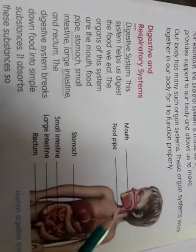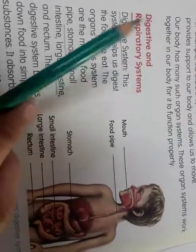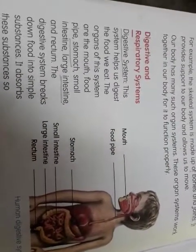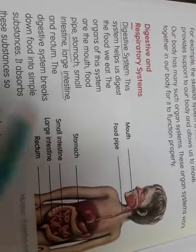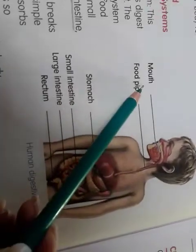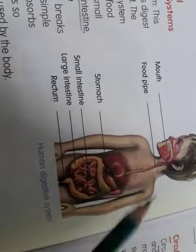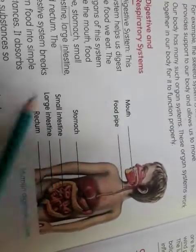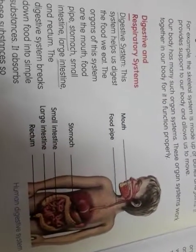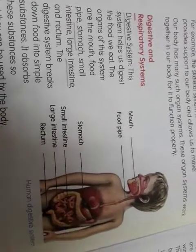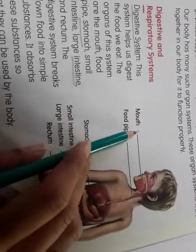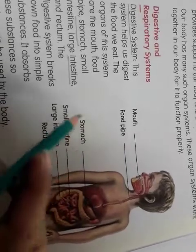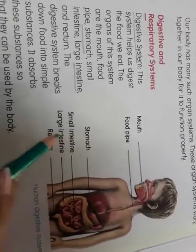Next lesson is the digestive and respiratory system. The digestive system is where food gets digested. The organs of the digestive system are: mouth, food pipe, stomach, small intestine, large intestine, and rectum. Each organ has its own work — the mouth is used to chew food, and the stomach grinds and digests the food.